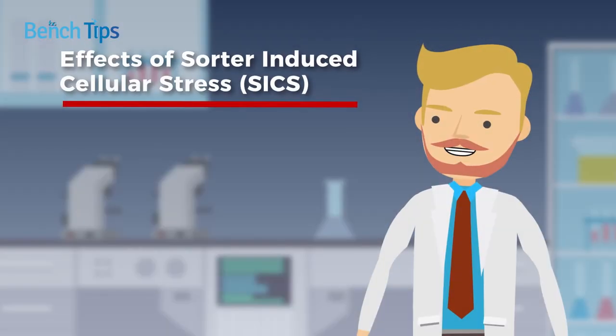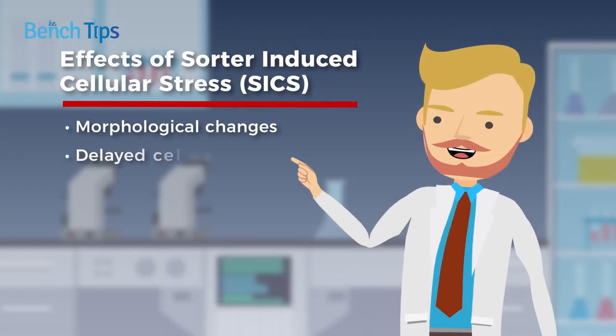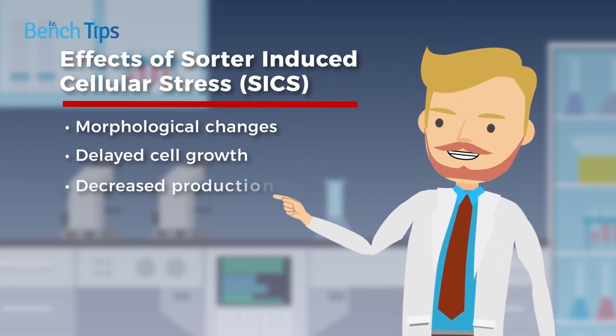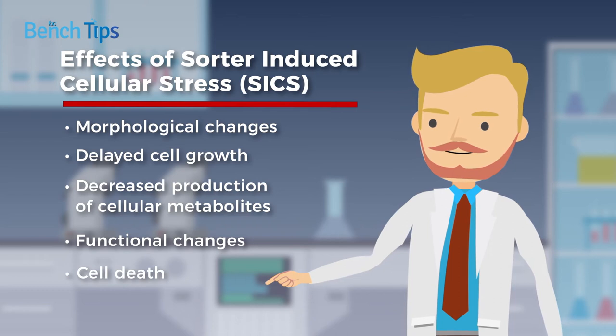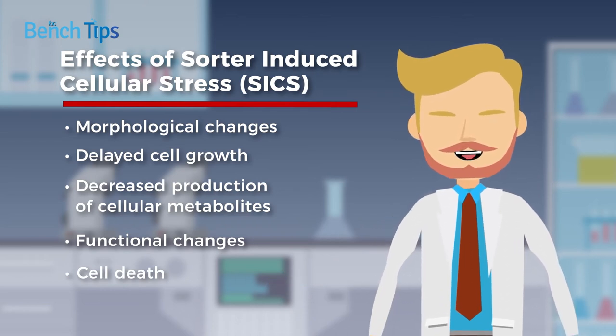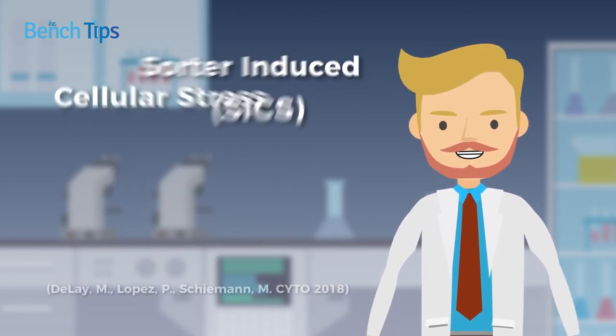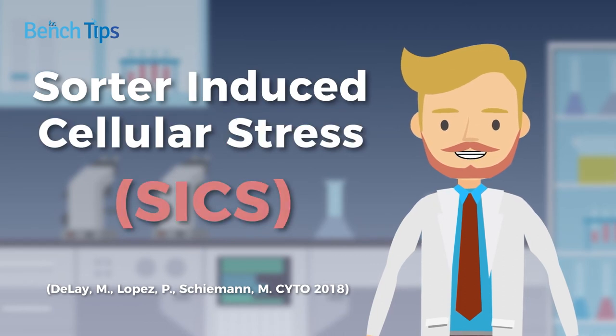As well as causing morphological changes, these factors can lead to delayed cell growth, decreased production of cellular metabolites, functional changes, and even cell death, a set of highly undesirable cellular events that have collectively been termed sorter-induced cellular stress, or SIX.